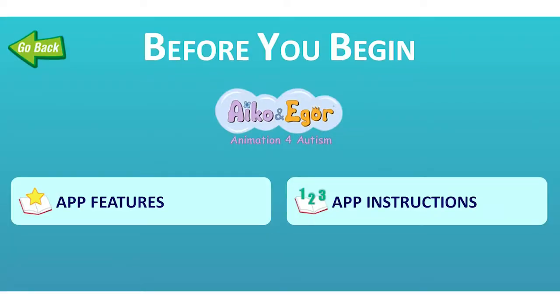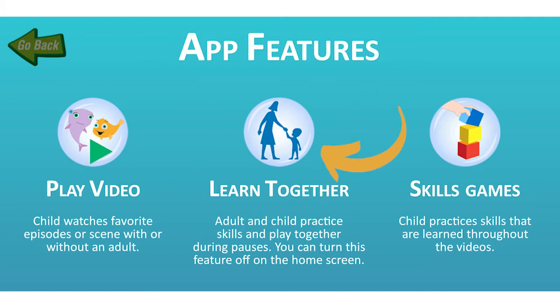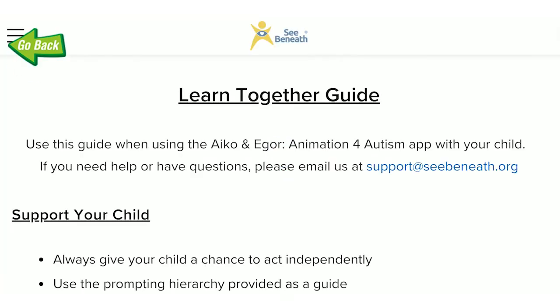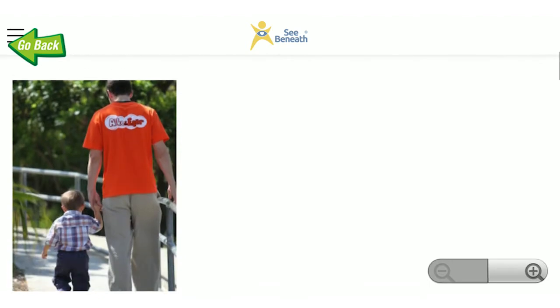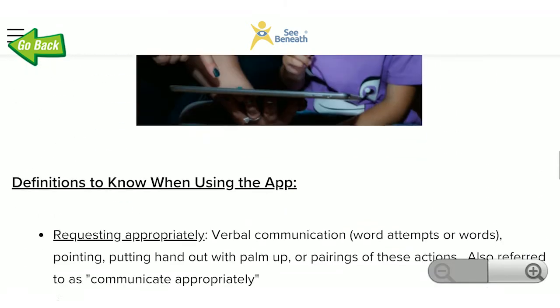You will see two buttons to help you learn more about the app. App Features displays the three ways to engage with different episodes. Play Video and Skills Games are for a child to use alone or with others. Learn Together is designed specifically for a child and adult together to practice developmental skills. App Instructions include a critical resource called the Learn Together Guide — read this webpage for important tips about how to use the Learn Together function and how to maximize learning experiences for a child with ASD.